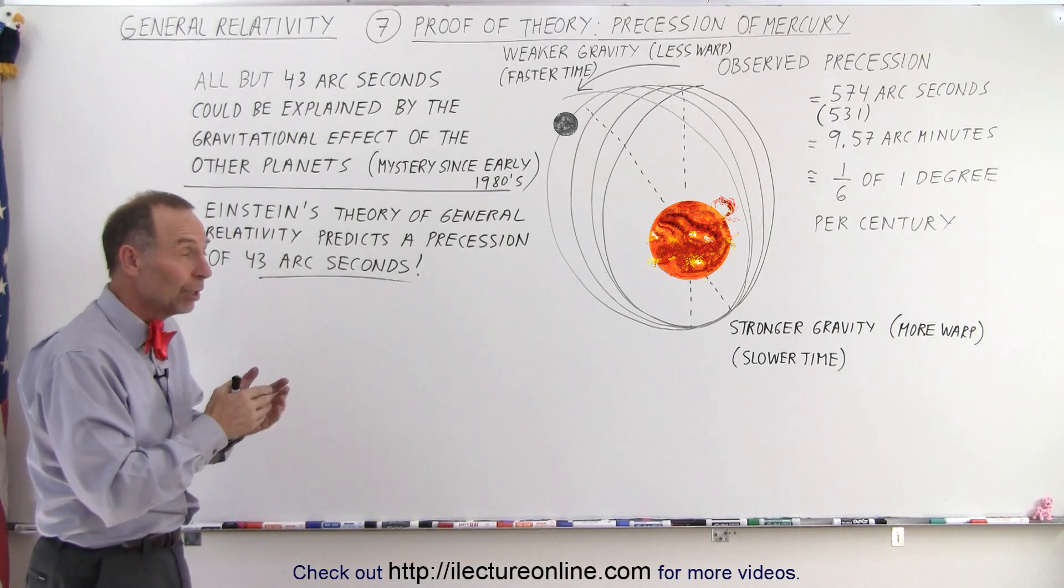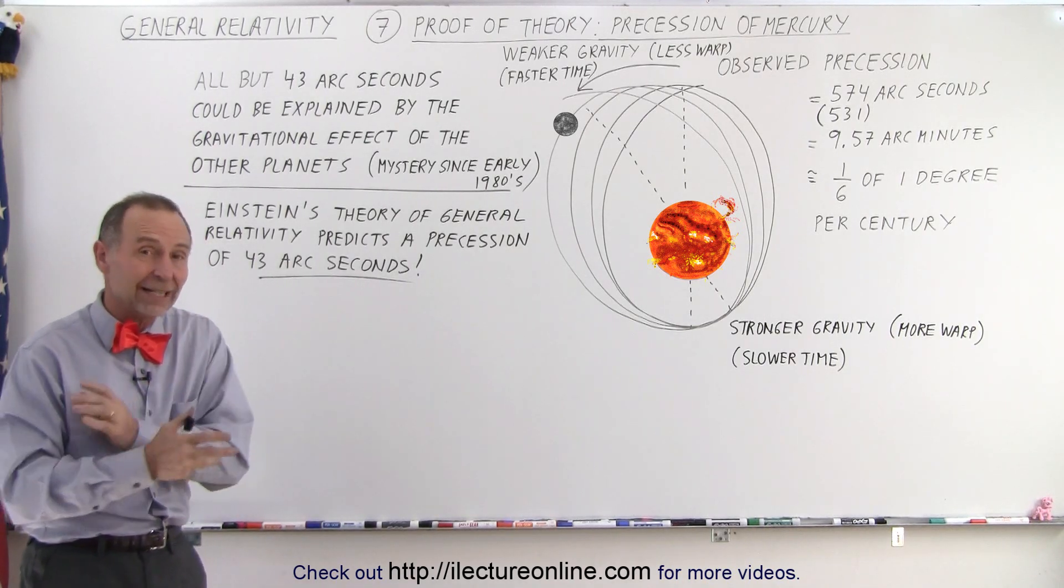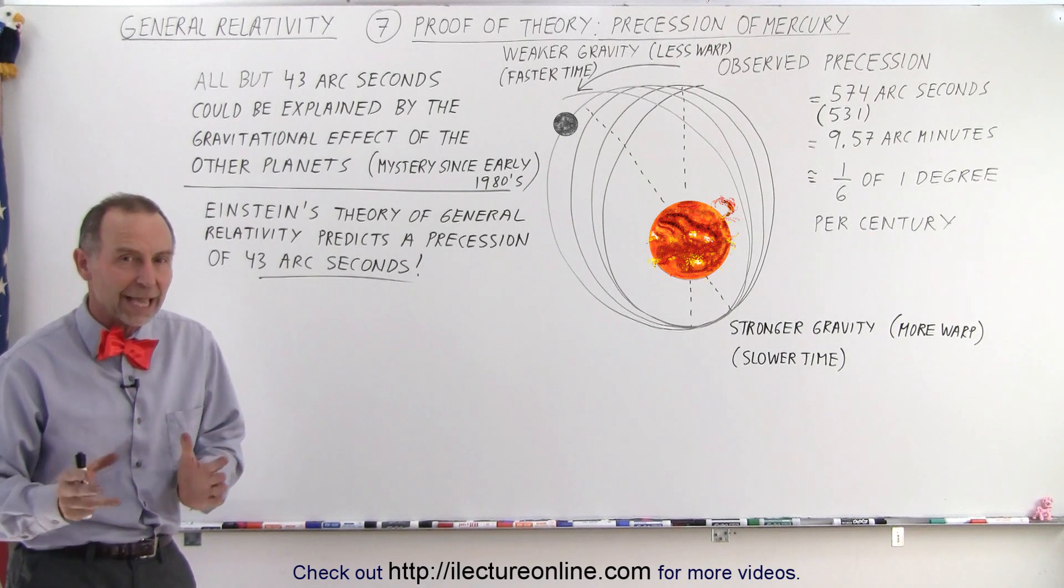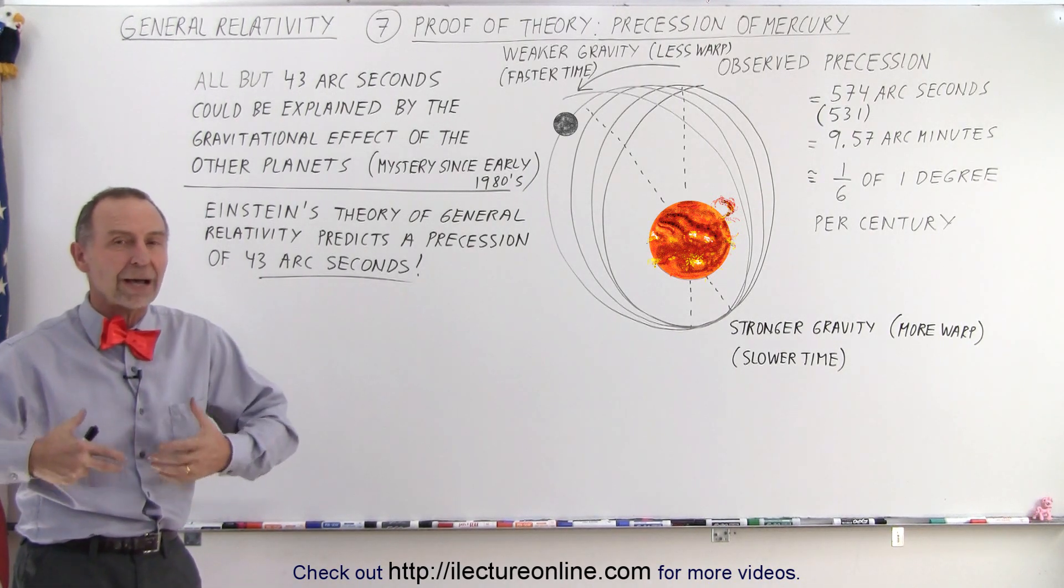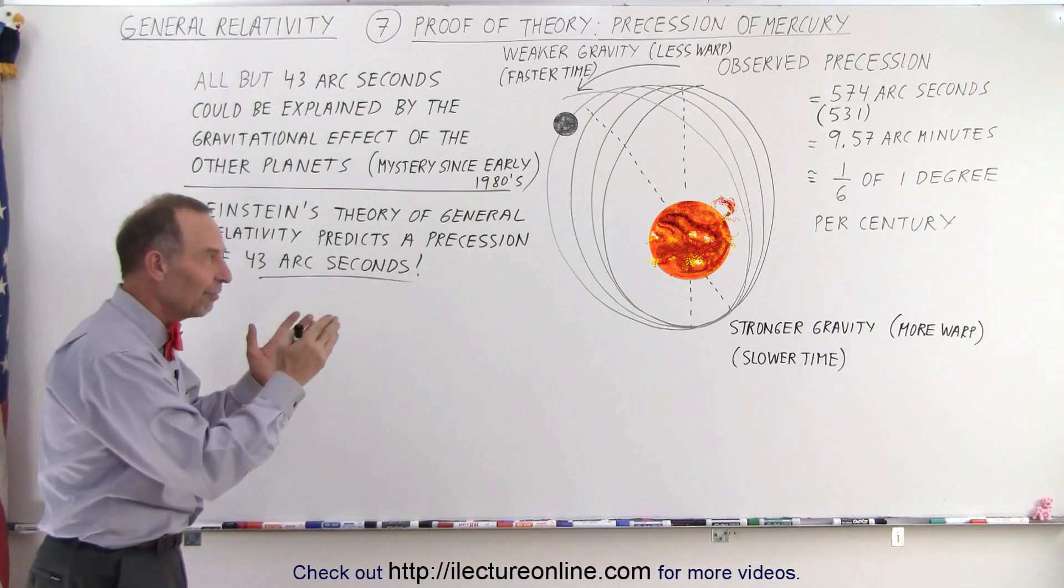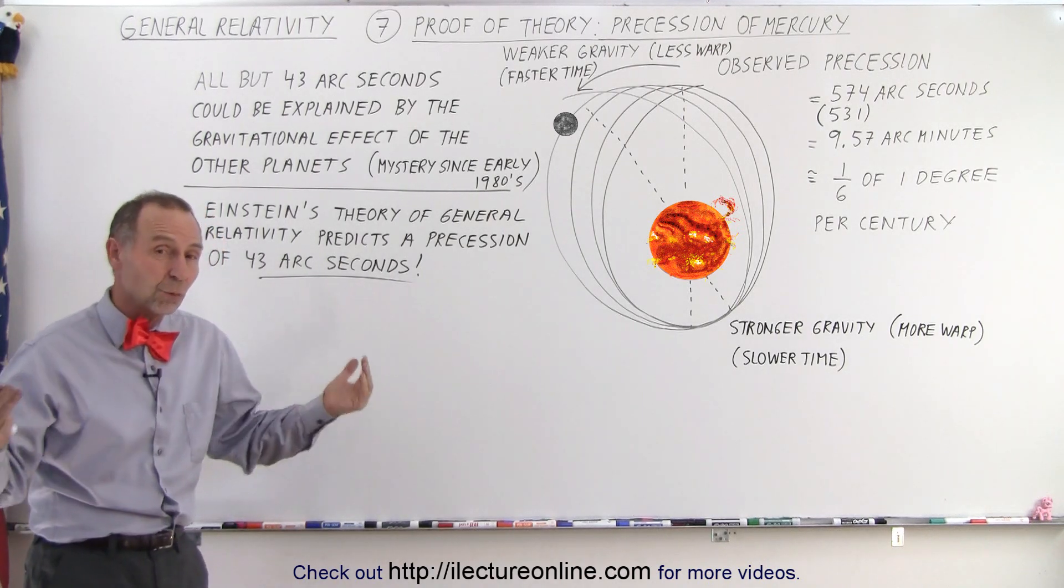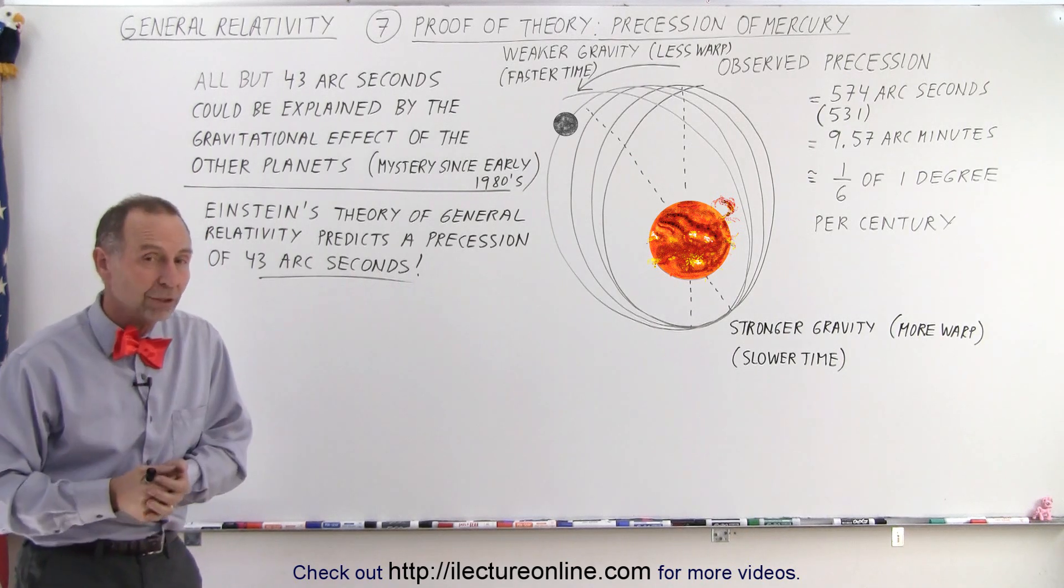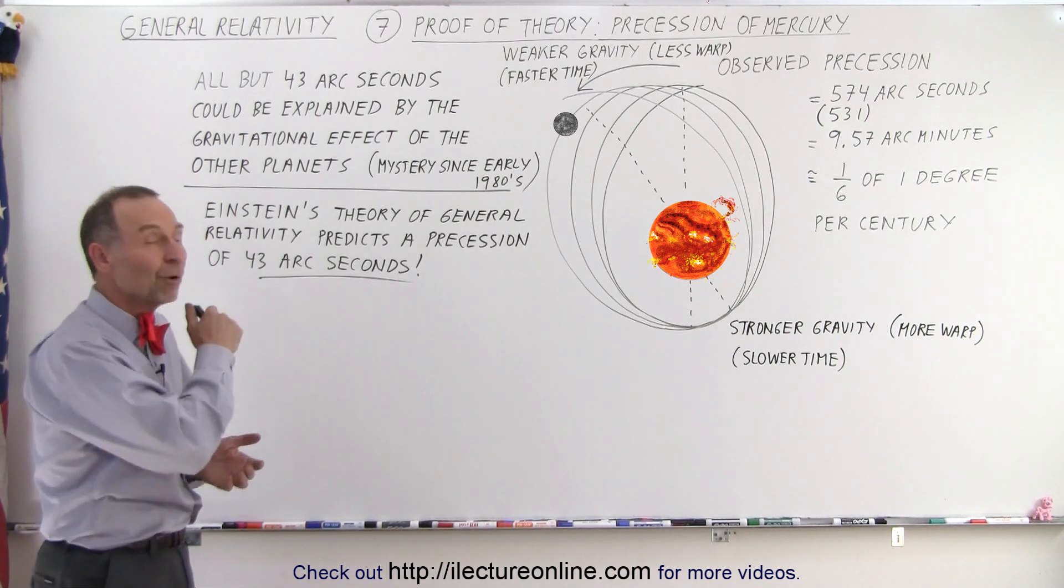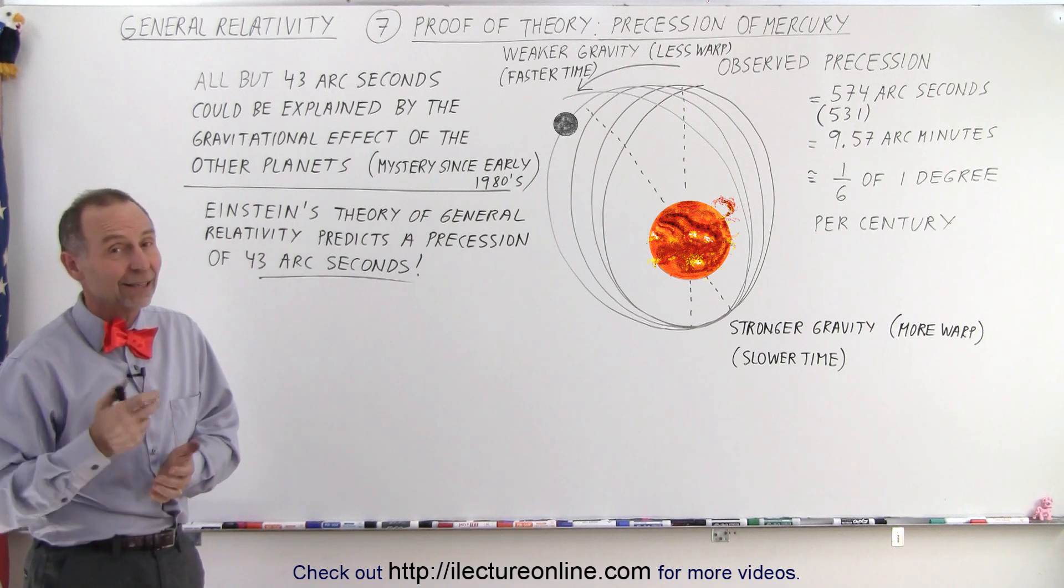It really did show that there are things that cannot be explained by Newtonian mechanics, that cannot be explained by Newton's equation of gravity. In events where the warp of space is such that time is slower, it does have an effect on the motion of the planet. And that is how it was discovered.